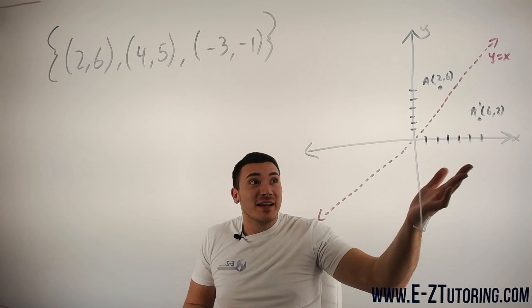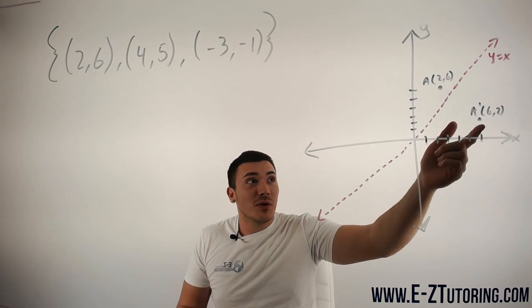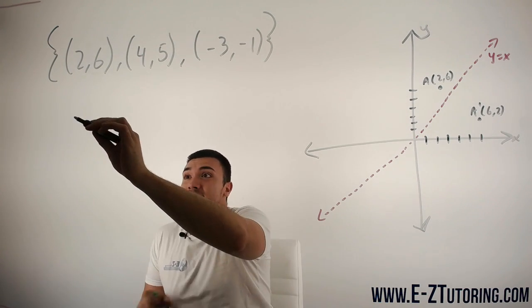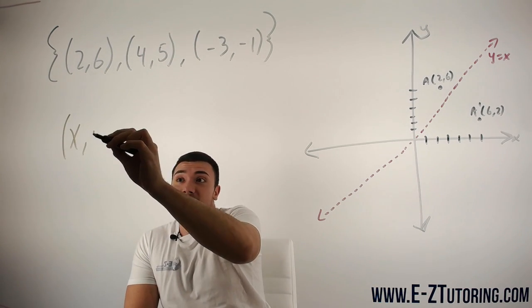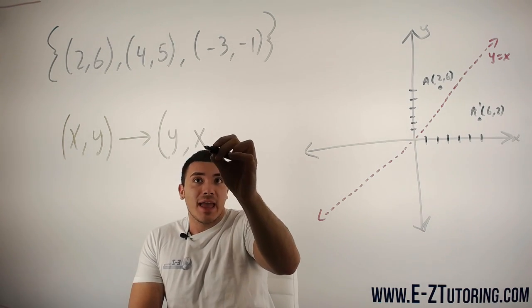You'll notice that to find your inverse, all you need to do is use the reflection rule over the line y equals x. That rule is that your coordinates (x, y) will go to (y, x).